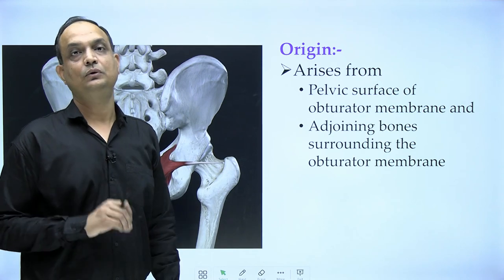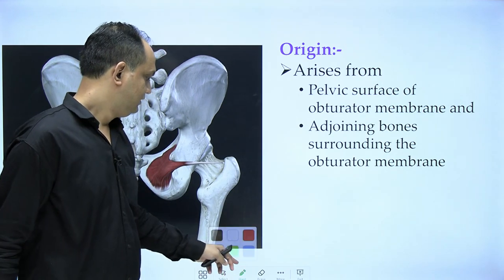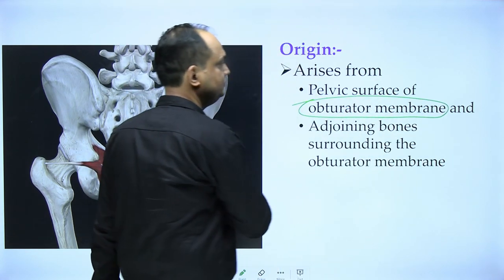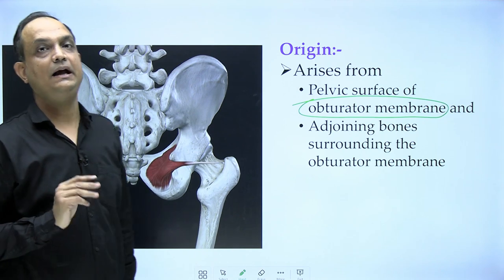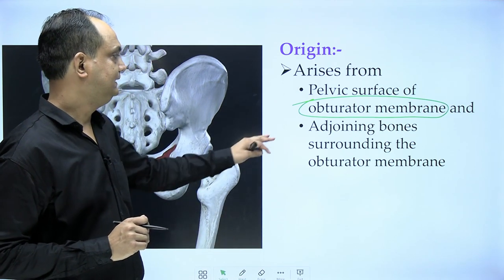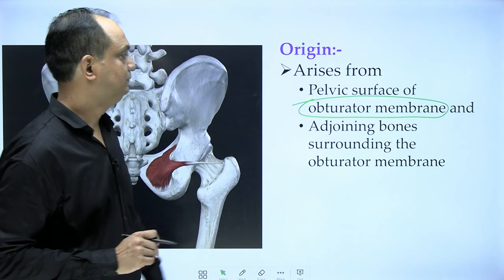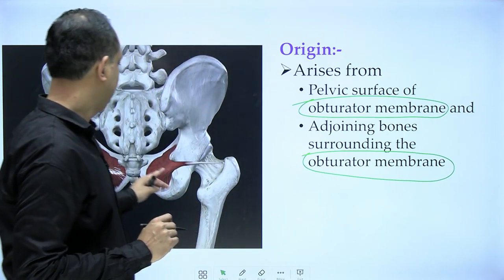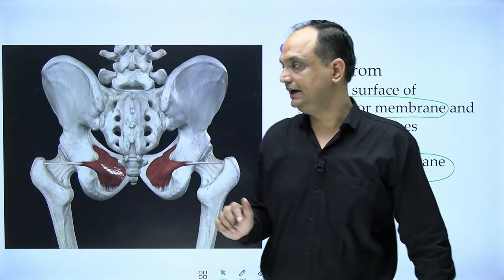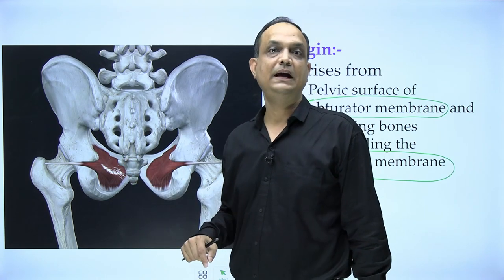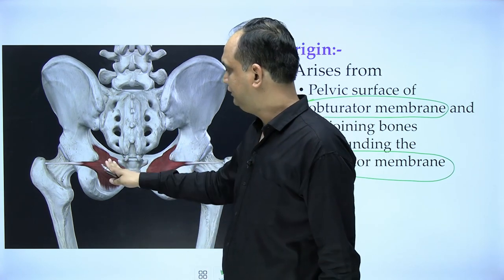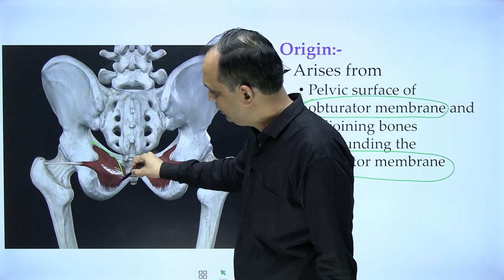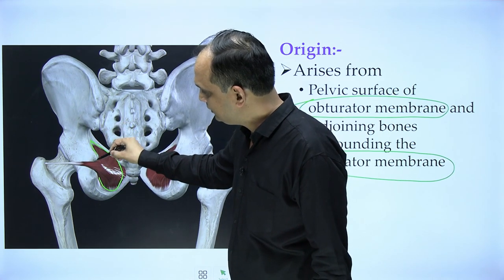The exact origin of this muscle: it takes origin from the inner side of the obturator membrane, also called the pelvic surface of the obturator membrane. It also arises from the adjoining bones surrounding the obturator membrane. We are viewing from the inside of the pelvis — the inner side of the hip bone — where you can see the origin of obturator internus.